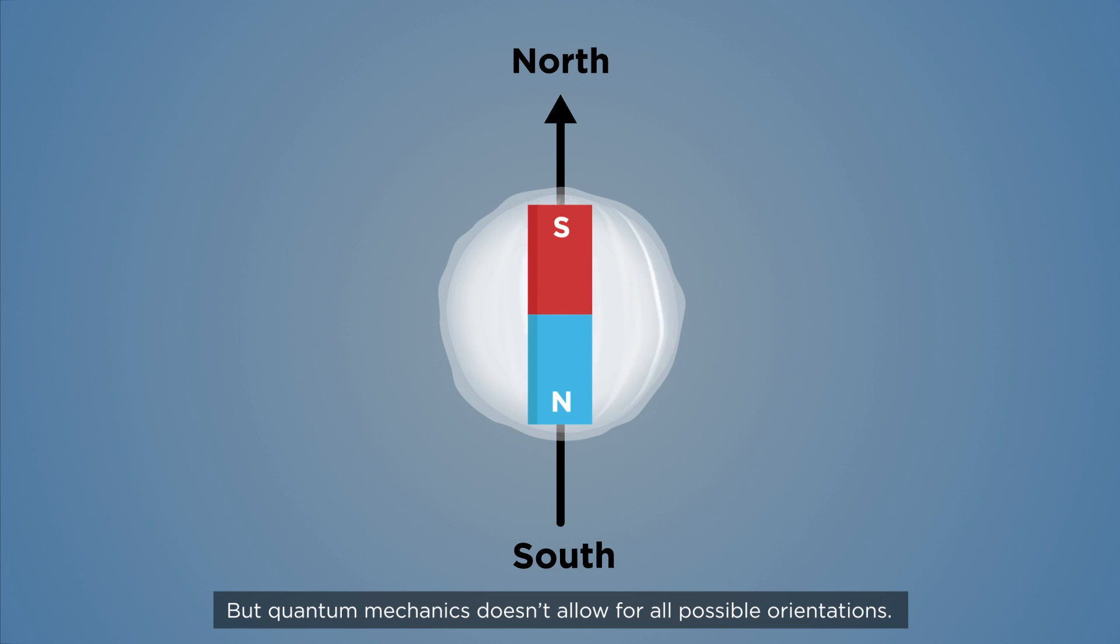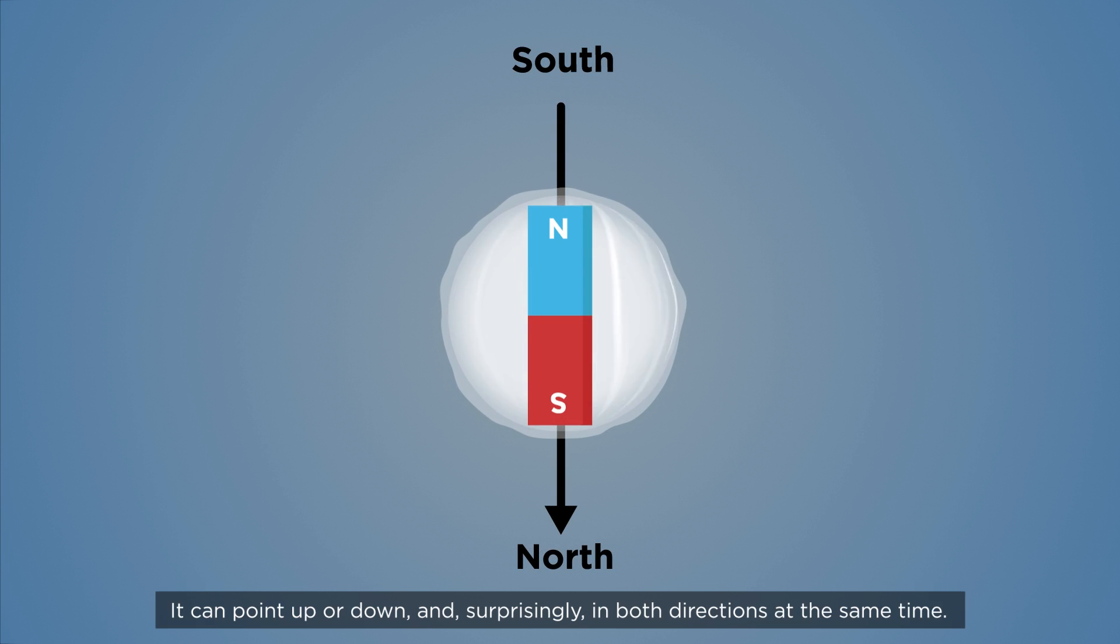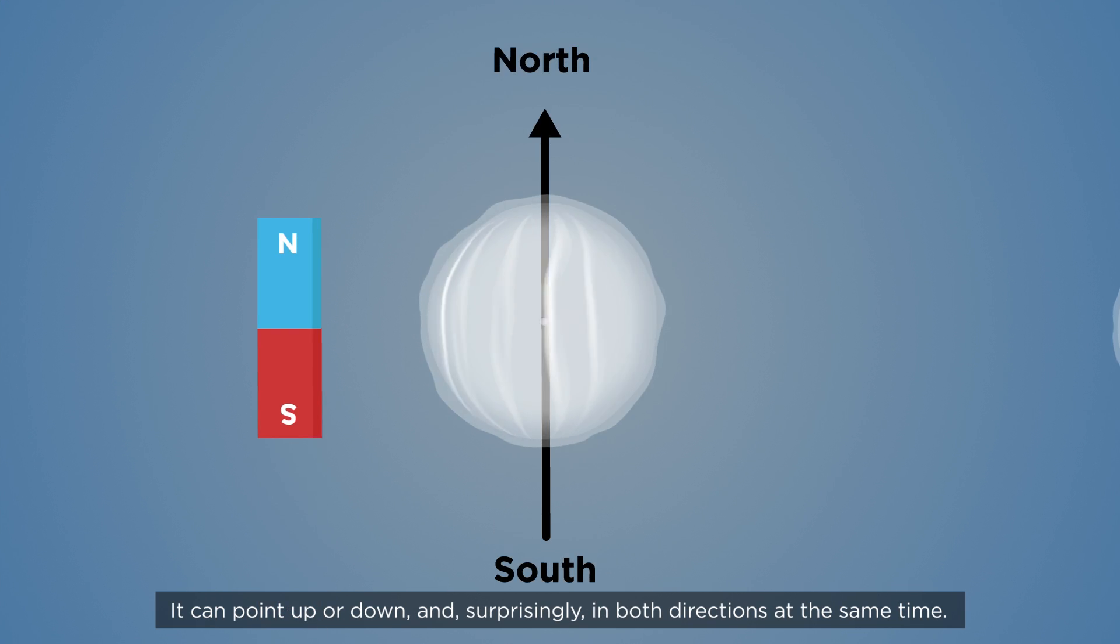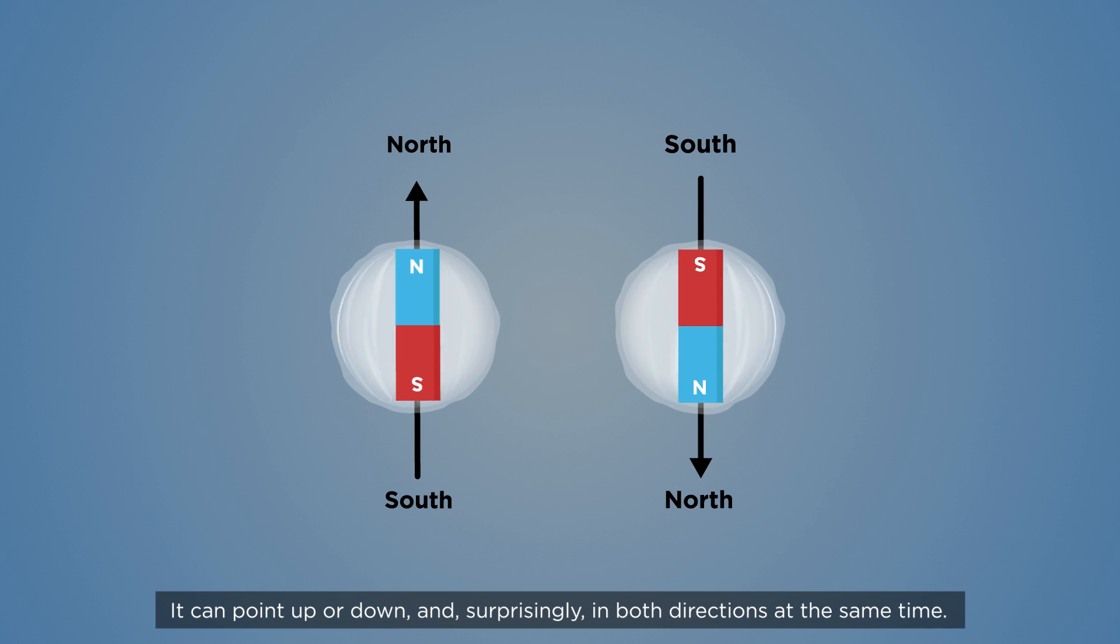But quantum mechanics doesn't allow for all possible orientations. It can point up or down, and surprisingly, in both directions at the same time.